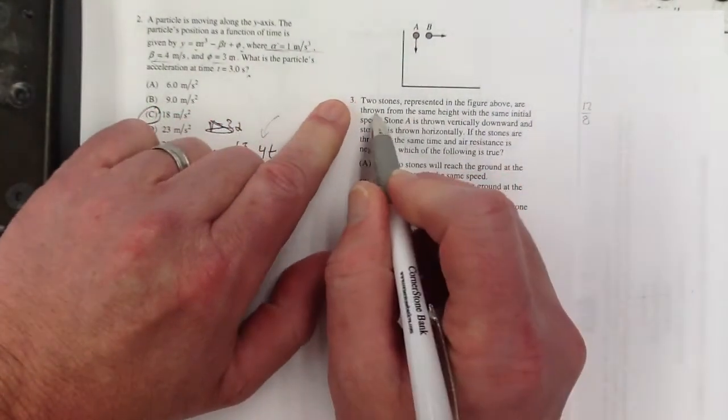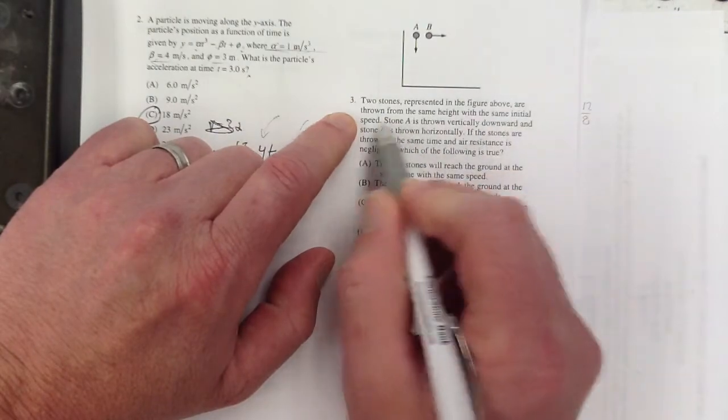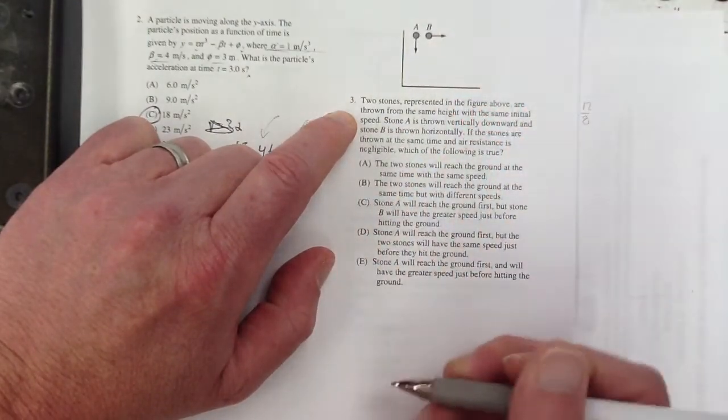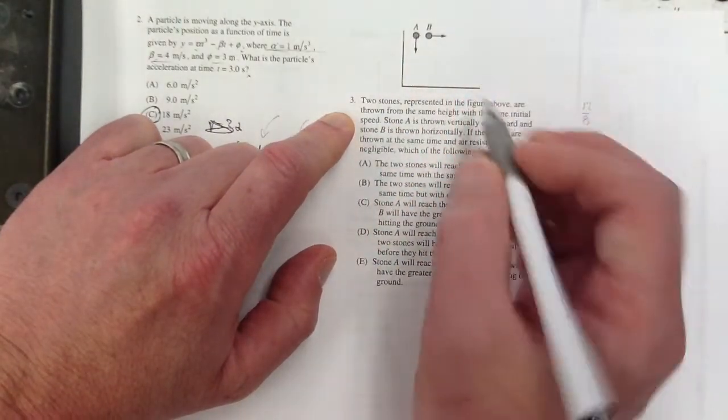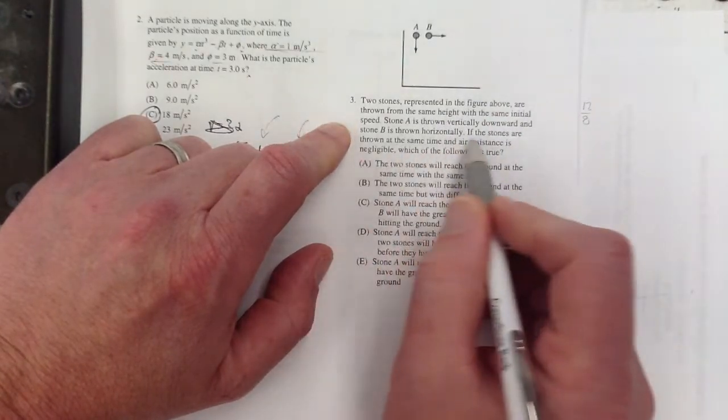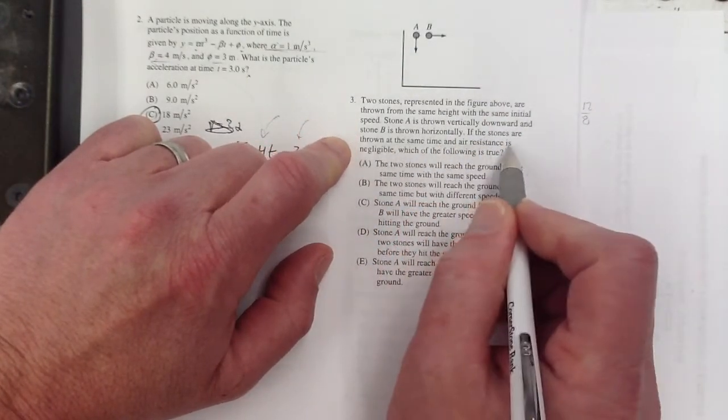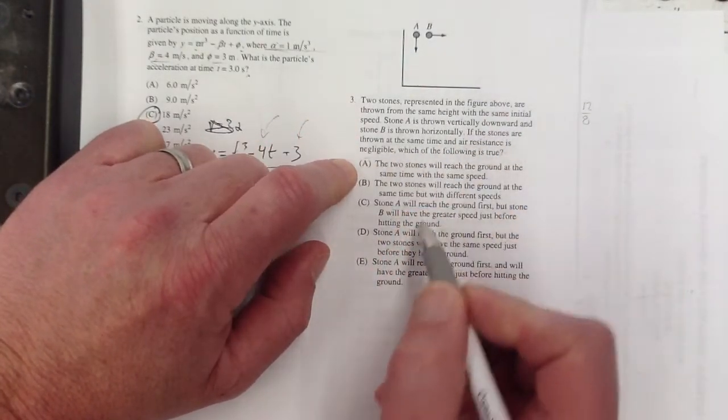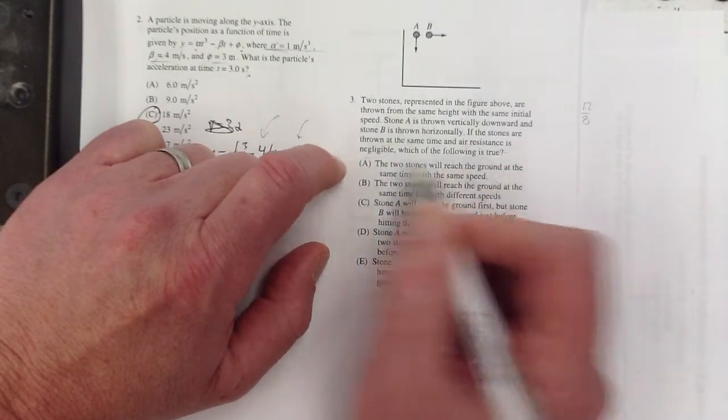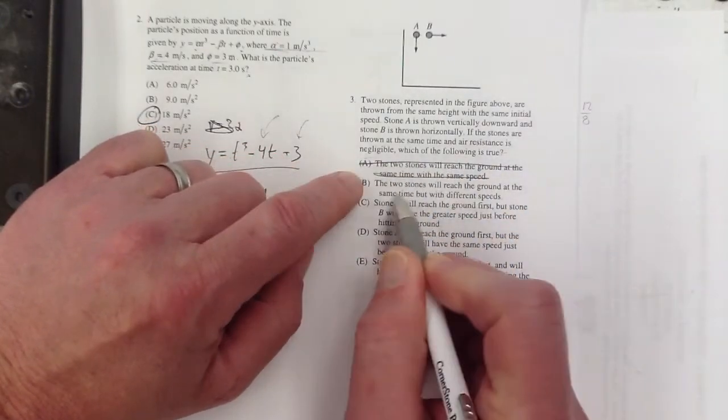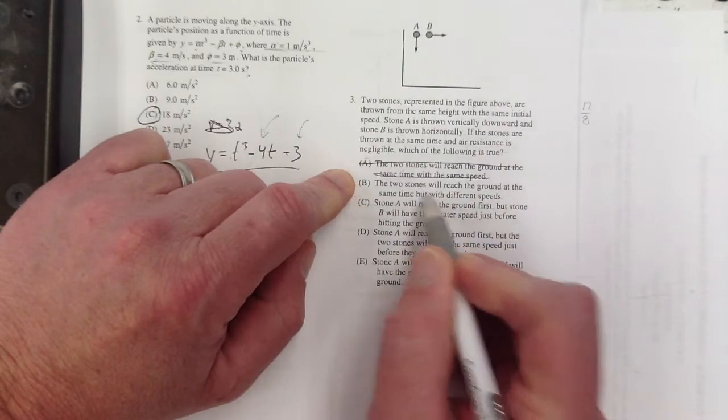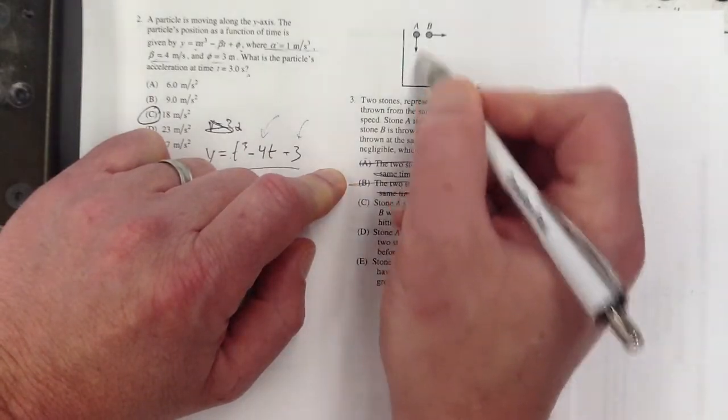Two stones, representing the figure above, are thrown from the same height with the same initial speed. This one down, this one that way. So that's going to get to the ground first, right? If the stones are thrown at the same time and air resistance is negligible, which one of the following is true? Two stones will reach the ground at the same time. Meh. The two stones will reach the ground at the same time with different speeds. No, that's going to get to the ground first.